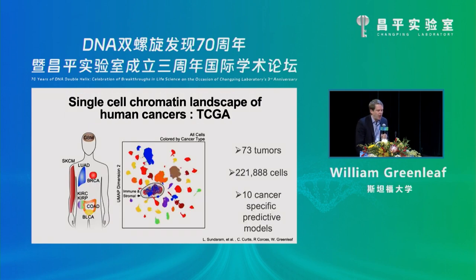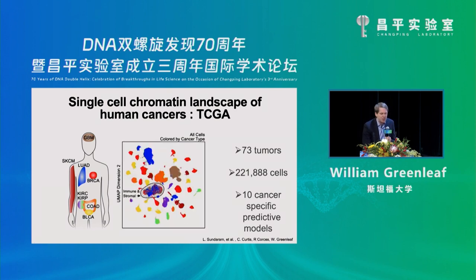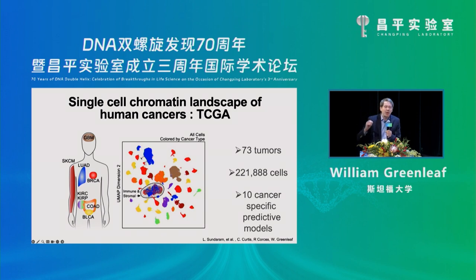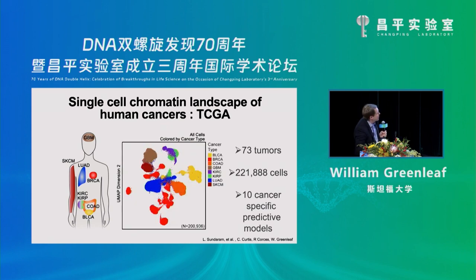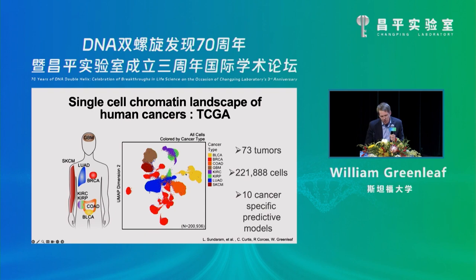We can also do this in cancer. We've done it in TCGA with 73 different tumors and about 200,000 cells, doing ATAC-seq across 10 different cancers. If we naively do a UMAP, the different cancers don't cluster with one another — individual patients cluster individually — because of copy number changes. There's big copy number variation that drives variation in accessibility. But if we regress that out, we actually see the clusters come together and the underlying trans-regulation in different cancer types is actually very similar, which is what you might expect.